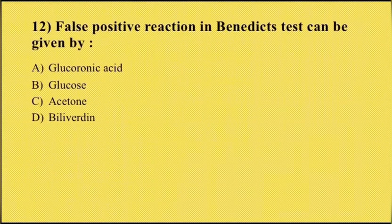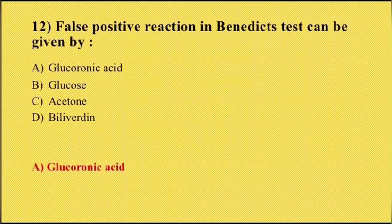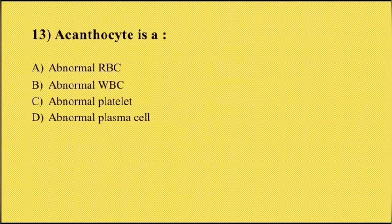Twelfth question: a false positive reaction in Benedict's test can be given by option A glucuronic acid, option B glucose, option C acetone, option D galactose. The correct answer is option A, glucuronic acid. Other reducing substances also give false positives for Benedict's test, for example ascorbic acid and homogentisic acid.